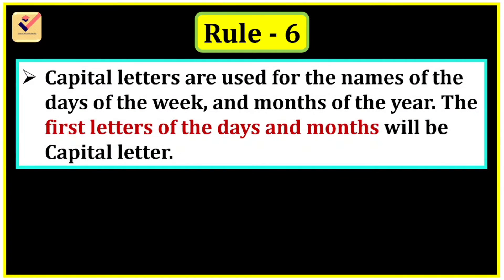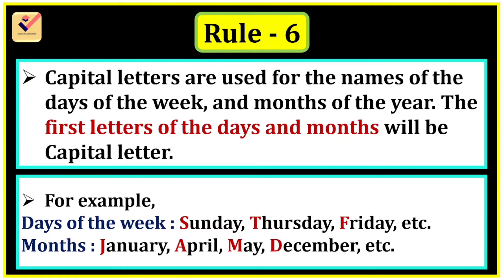Rule 6: Capital letters are used for the names of the days of the week and months of the year. The first letters of the days and months will be capital. For example, days of the week: Sunday — S is capital; Thursday — T is capital; Friday — F is capital. Months: January — J is capital; April — A is capital; May — M is capital; December — D is capital.